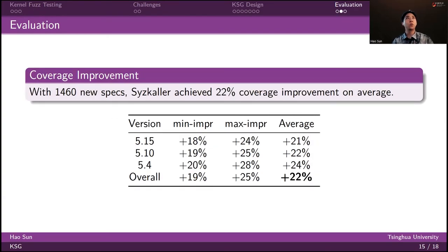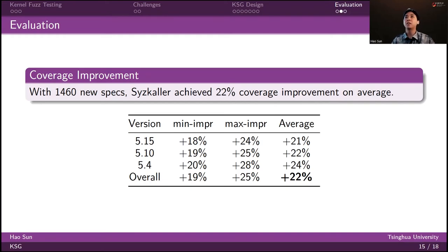To test if our generated specifications can improve the coverage capability of the fuzzer, we take all the newly generated specifications as inputs to the kernel fuzzer. As a result, with 1,416 newly generated specifications, the fuzzer is able to achieve a 22% coverage improvement on average, as the detailed information shown in the table.